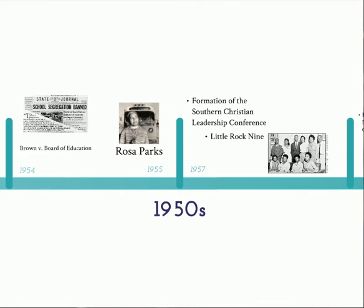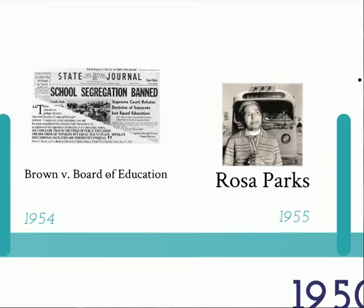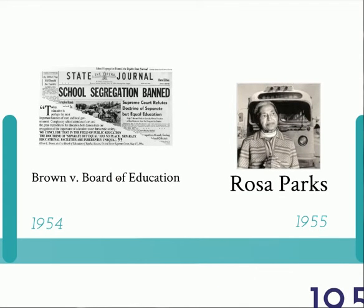In the 1950s, in 1954, the Supreme Court ruled in the case of Brown v. Board of Education that segregation in public schools is unconstitutional. This overturned the Supreme Court case of Plessy v. Ferguson.